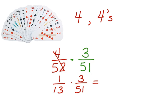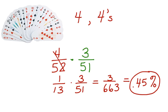And when we multiply across, we get 3 out of 663. Now, that's a strange fraction to understand the percentage, or to understand the probability of. So let's write it as a percent. If we divide 663 into 3, we will get 0.45%. That's the probability of drawing two 4s chosen at random from a deck of cards.